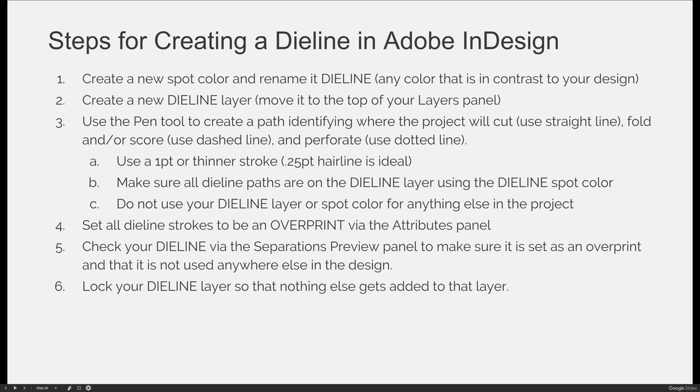Step five: check your dye line via the separations preview panel to make sure it's set as an overprint. If you turn your dye line spot color off and you see a white line everywhere the dye line was, it's still set to be a knockout.